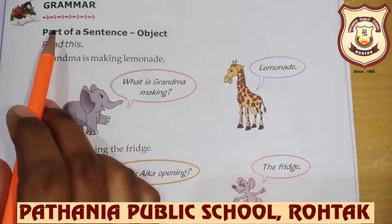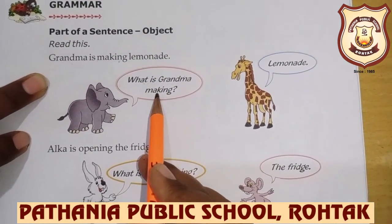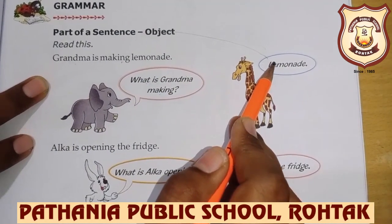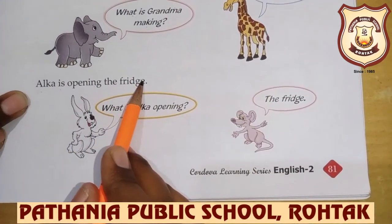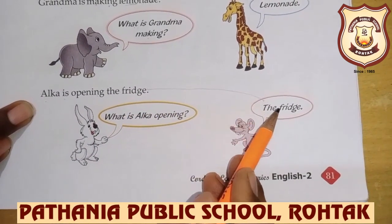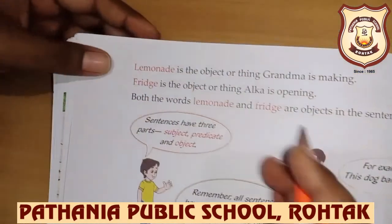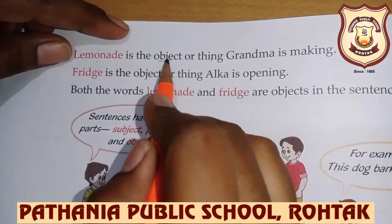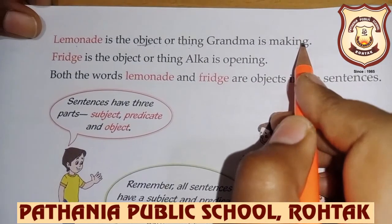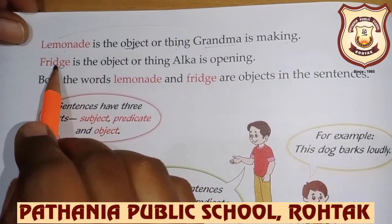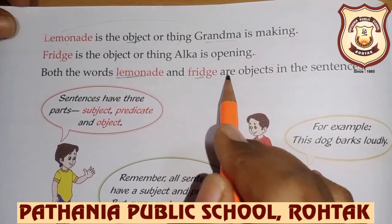Next question from grammar portion: parts of a sentence — object. Grandma is making lemonade. What is Grandma making? Object kya hai? Lemonade — lemonade is the object or thing. Next: Alka is opening the fridge. What is Alka opening? The fridge. The fridge is the object. Object kya hota hai? Koi saman, a thing. Both the words lemonade and fridge are objects in the sentence.